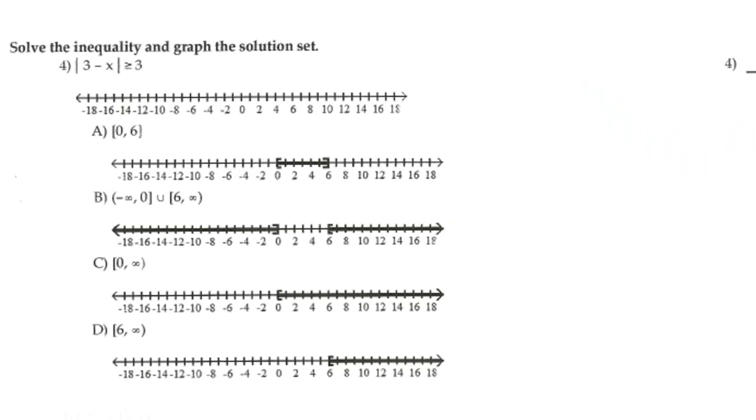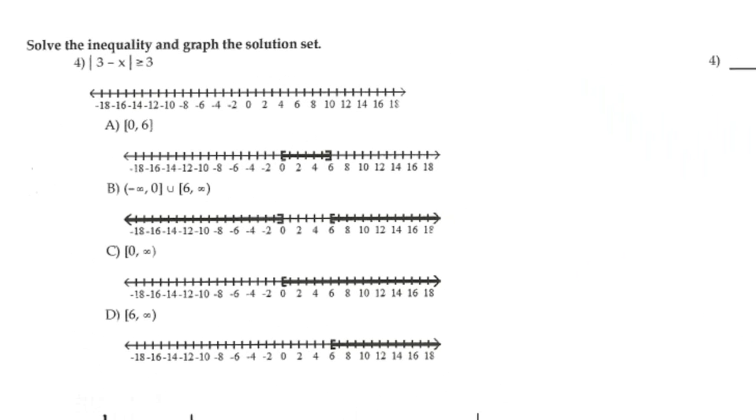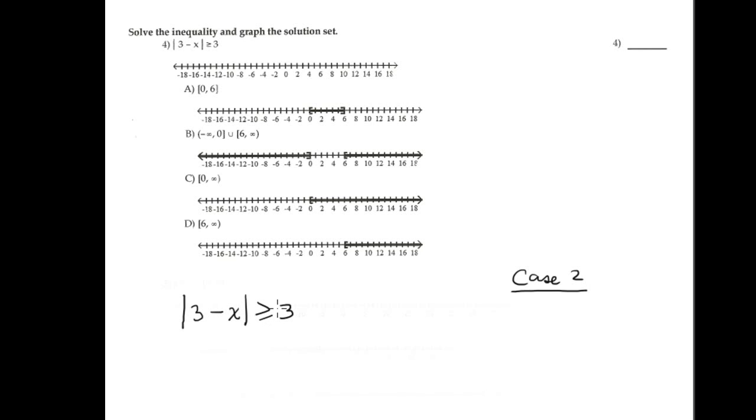Number four is an inequality containing absolute value. This is Case 2 because the sign is greater than. In Case 2, you separate into two problems: copy the expression inside the absolute value bars twice — the expression must be greater than or equal to three, and also less than or equal to negative three — connecting both inequalities with 'or' to form a compound inequality.